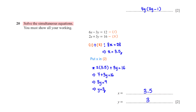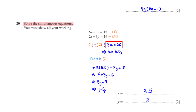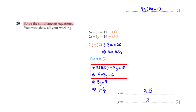Solve the simultaneous equations. We'll be using the elimination method. Since we have minus 3y in equation 1 and 3y in equation 2, we can eliminate y by adding equation 1 to equation 2. This gives us 8x equals 28. When we divide both sides by 8, we get x equals 3.5. Plugging x into equation 2: 2 times 3.5 plus 3y equals 16. 2 times 3.5 is 7. When we subtract 7 from both sides, we have 3y equals 9. Dividing both sides by 3, we get y equals 3.